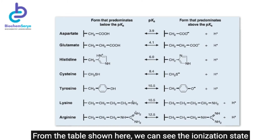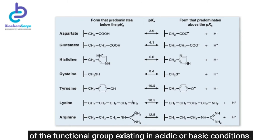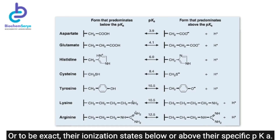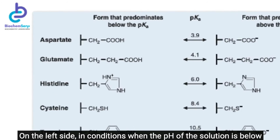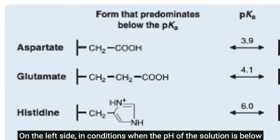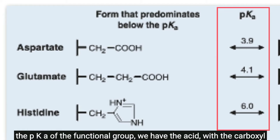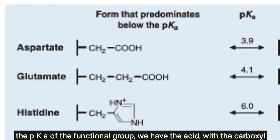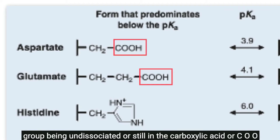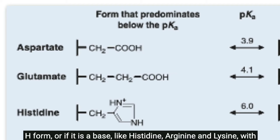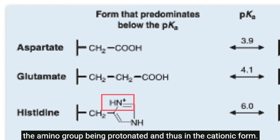From the table shown here, we can see the ionization state of functional groups existing in acidic or basic conditions — specifically, their ionization states below or above their specific pKa. On the left side, in conditions where the solution pH is below the pKa of the functional group, we have the acid with the carboxyl group undissociated (still in the COOH form). For basic amino acids like histidine, arginine, and lysine, the amino group is protonated and thus in the cationic form.